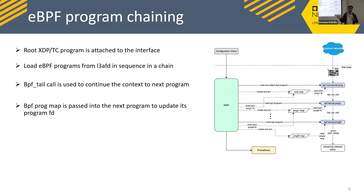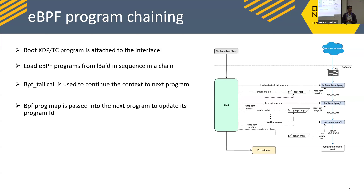Those earlier instruction limits meant we couldn't have one gigantic program containing everything. We needed to break every program into smaller chunks and chain them. For Walmart, with so many programs, that chaining approach is essential.